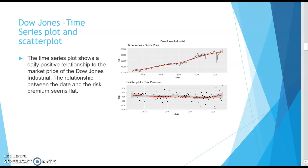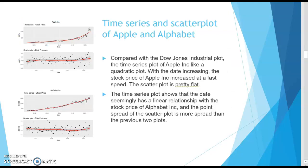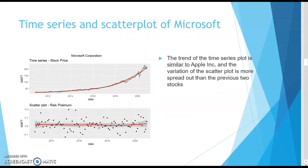The time series plot shows a daily positive relation to the market price of the Dow Jones Industrial. The relation between date and risk premium seems flat. Compared to the Dow Jones plot, the time series plot of Apple looks like a quadratic plot, as there was a drastic increase in Apple's valuation — the stock price of Apple increased at a much faster pace. The scatter plot for Apple is similar to Dow Jones and is pretty flat. The time series plot for Alphabet shows a linear relationship, and the point spread of its scatter plot is more spread out than the previous two plots.